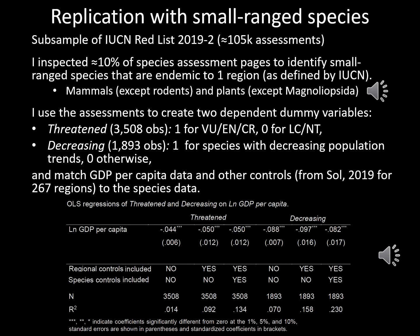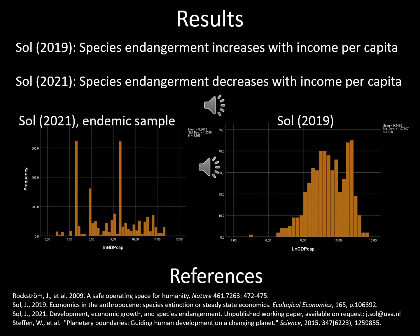The OLS regression results show the opposite relation between species endangerment and GDP per capita compared to the 2019 study. Based on the analysis with small range species, species endangerment decreases with GDP per capita. In brief, in 2019 I found that species endangerment increases with income per capita when organizing 2016 IUCN data by region. Here I have analyzed a subsample of small-ranged mammals and plants that suggest the opposite association. My best explanation for this paradoxical finding is that the association with GDP is estimated over a rather different part of the income distribution. Together, these findings suggest that poverty is more harmful to biodiversity than affluence. I look forward to hearing your alternative explanations coming Friday, and thank you for your attention.